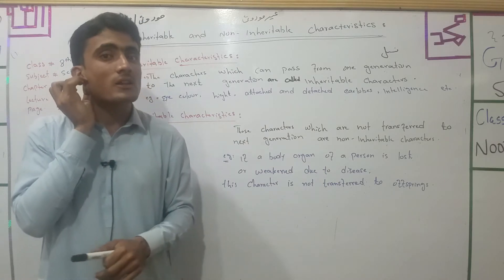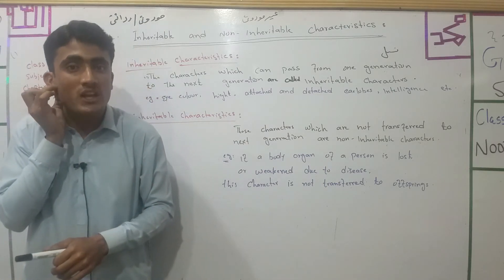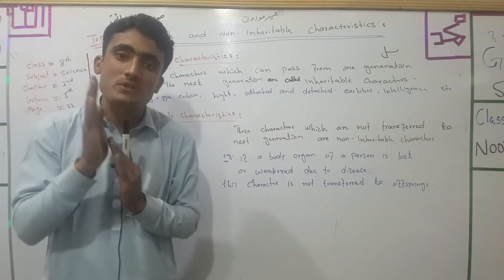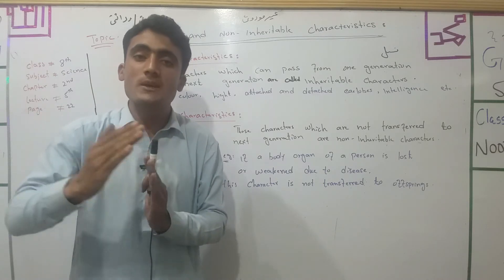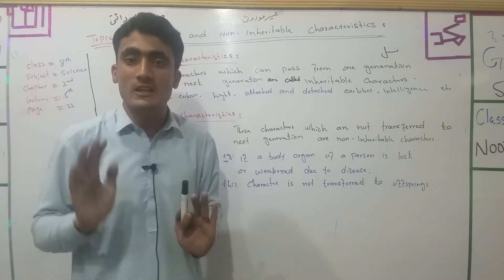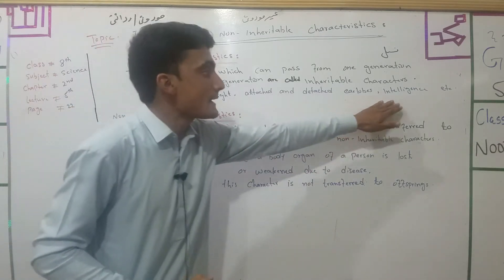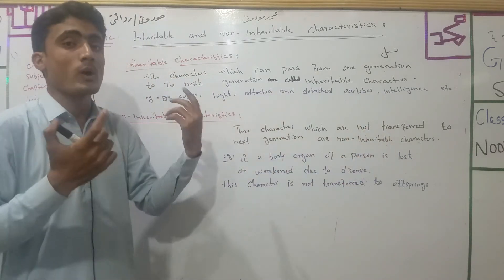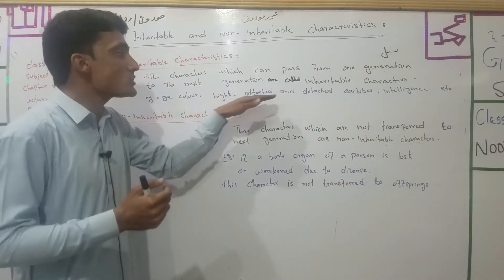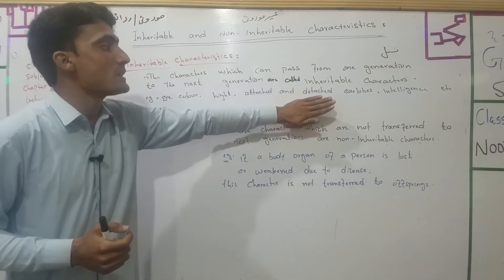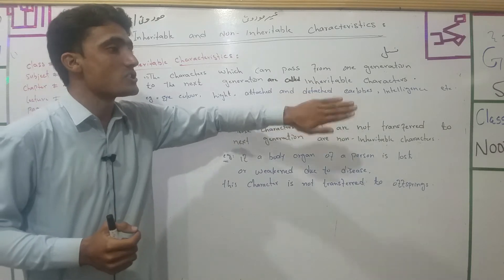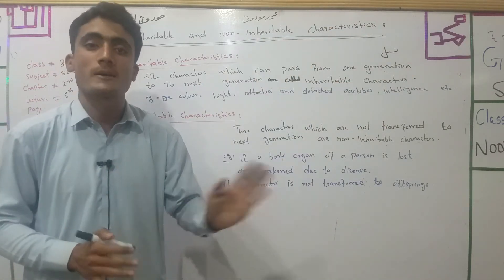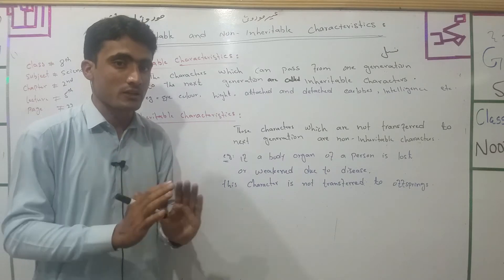The ear lobe is attached or detached. Attached means it is joined to the face; detached means it is free. Intelligence and body height are also inheritable characters — these traits are passed from parents to offspring, from one generation to the next generation.